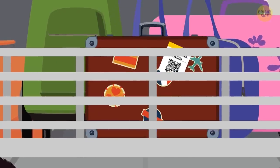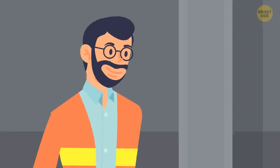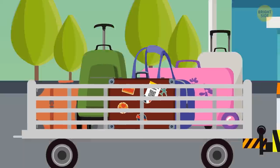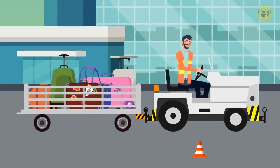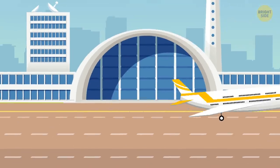Your suitcase gets on a bag cart together with plenty of others. Airport ramp agents control the process. The bag tug pulls the cart onto the tarmac. Baggage handlers load it onto the plane and it takes off.